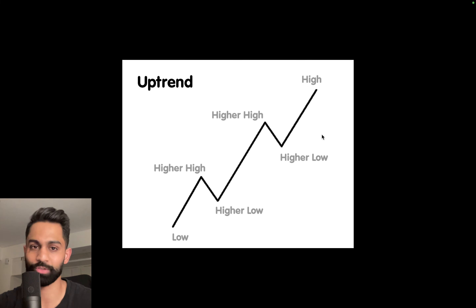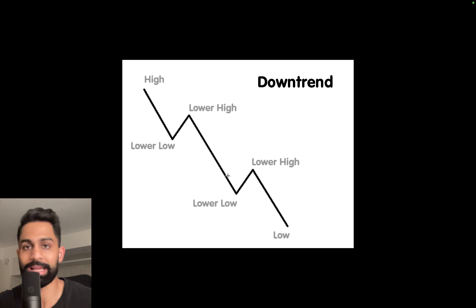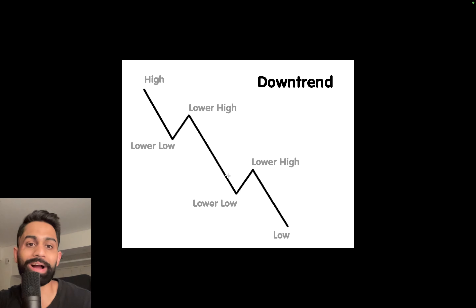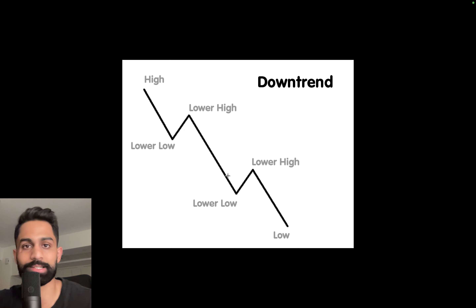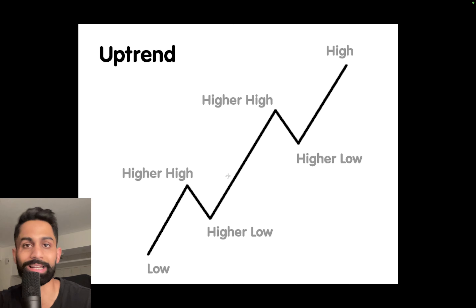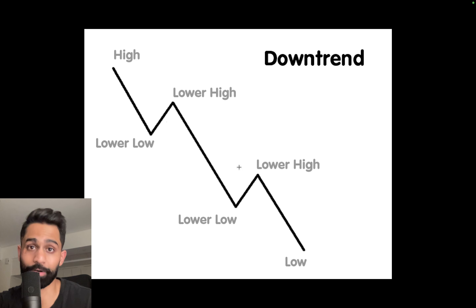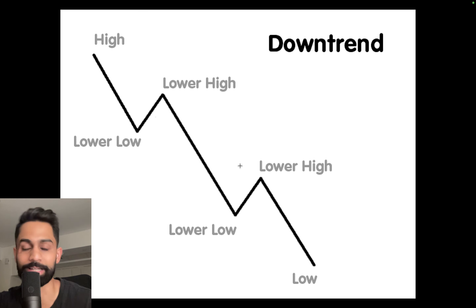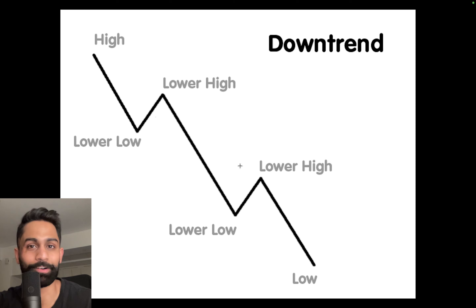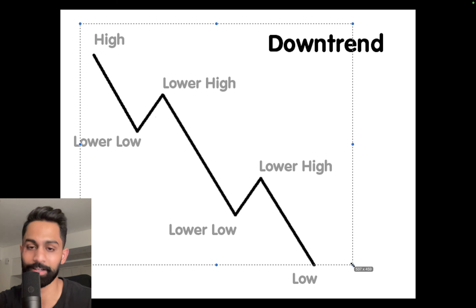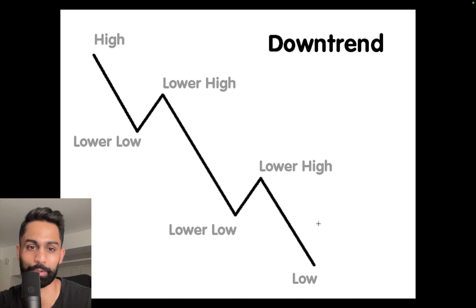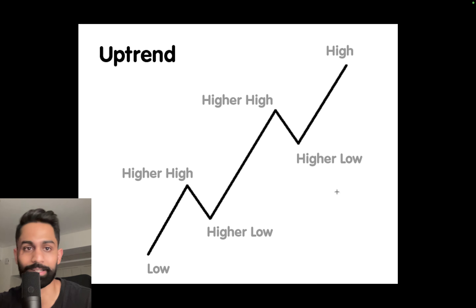Now I want to go over a very basic understanding of trends. There's an uptrend and a downtrend in the market. Every time you analyze the S&P, Nasdaq, stocks, commodities, or crypto, you'll find them in either an uptrend or a downtrend about 90 percent of the time. Our job is to assess which one we're in. A downtrend has lower highs and lower lows — consistently going down. An uptrend is the exact opposite: higher highs and higher lows.